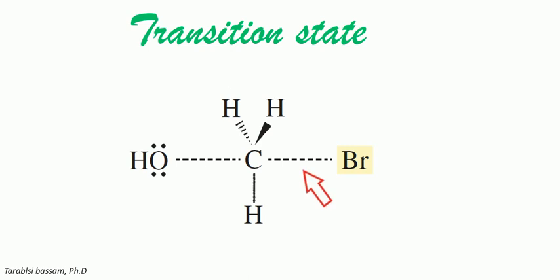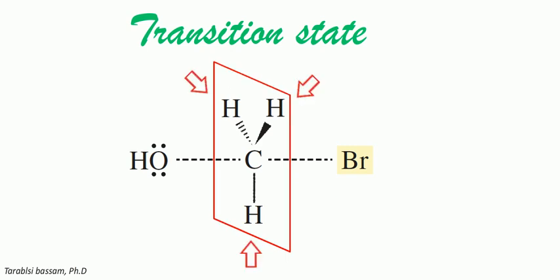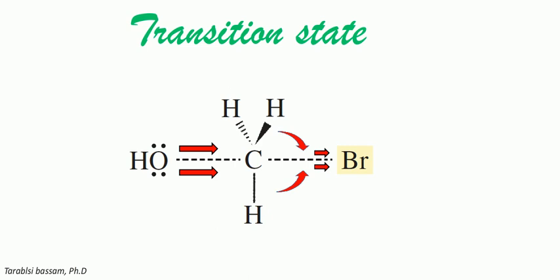At the transition state, the CH bonds are all in the same plane to allow the nucleophile to form its bond. As the nucleophile gets closer to the carbon, the leaving group, the bromine, moves further from it and leaves the molecule.